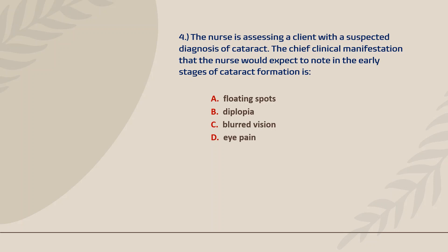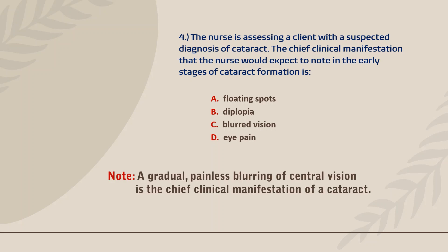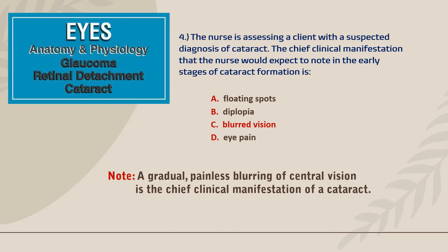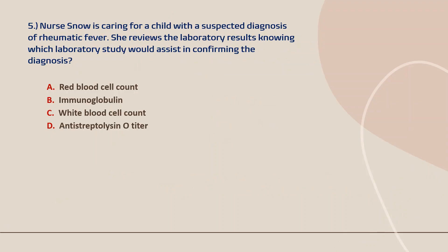Question number four. The nurse is assessing a client with a suspected diagnosis of cataract. The chief clinical manifestation that the nurse would expect to note in the early stages of cataract formation is a gradual, painless blurring of central vision, which is the chief clinical manifestation of a cataract. Therefore, the correct answer is C. If you want to learn more about the eyes, we have a simple discussion available — check the link after the video.